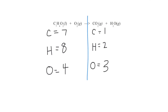I can start trying to balance. I have seven carbons on the left and just one on the right, so the first thing I'll do is put a seven in front of the carbon dioxide on the right. That multiplies everything by seven, giving me seven carbons — so I update that to seven. It also gives me 14 oxygens from that compound. Adding the one oxygen from the other product gives me 15 total oxygens on the right, so that three changes to 15.